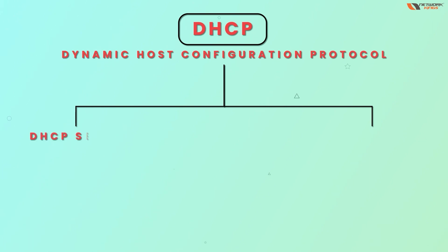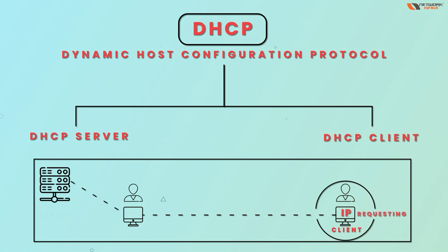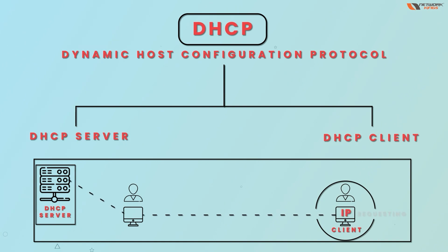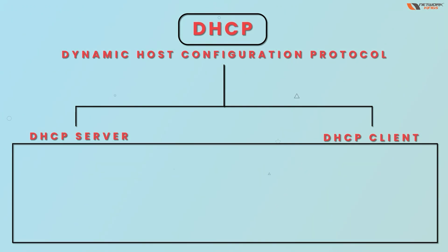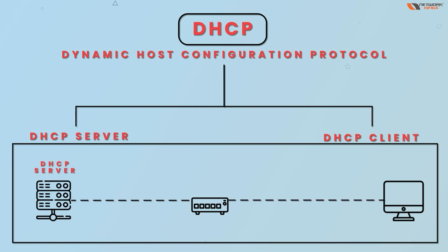Now let's see how DHCP works. There will be a DHCP server and a DHCP client. The client is the one requesting an IP address — in this case, a laptop. The DHCP server is the device providing the IP address. Let's say a PC is connected to a switch, and the switch is connected to a DHCP server. The PC doesn't know the IP address of the DHCP server.